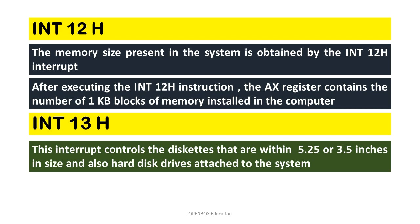Interrupt type 13h: This interrupt controls diskettes that are 5.25 or 3.5 inches in size, and also hard disk drives attached to the system.